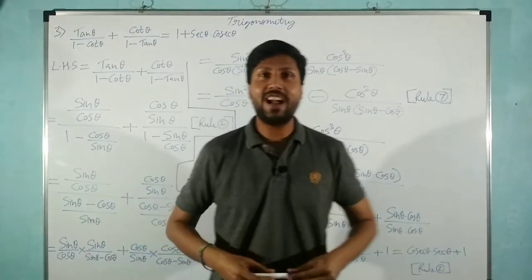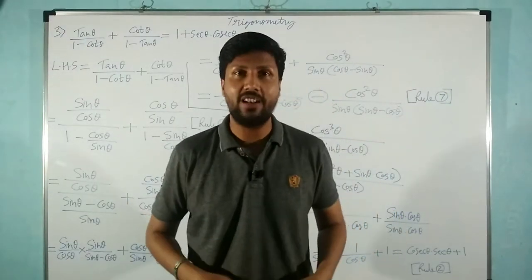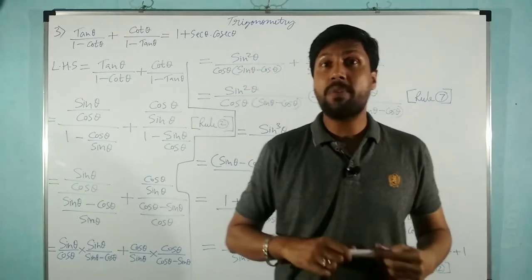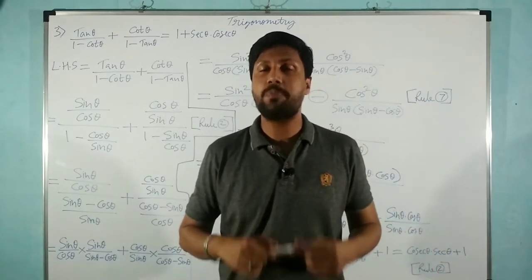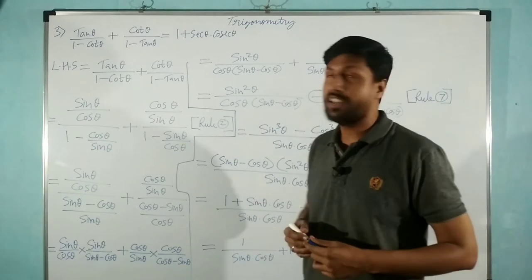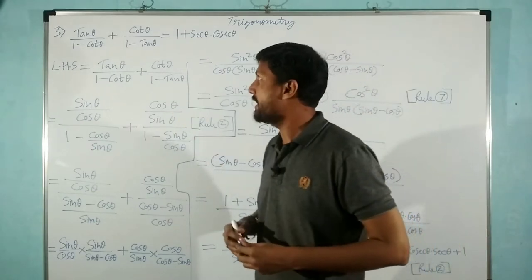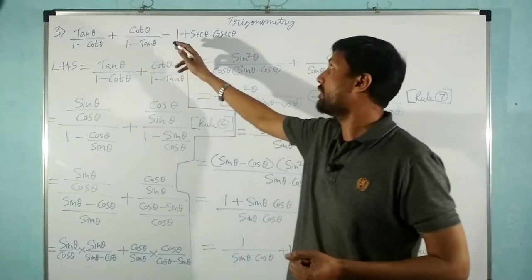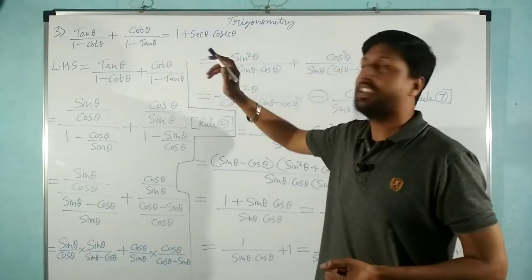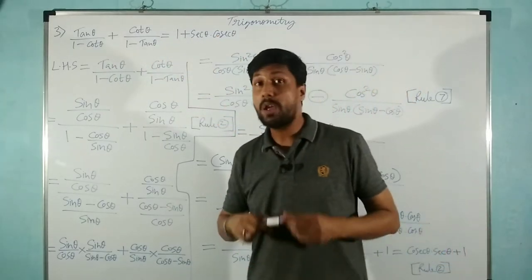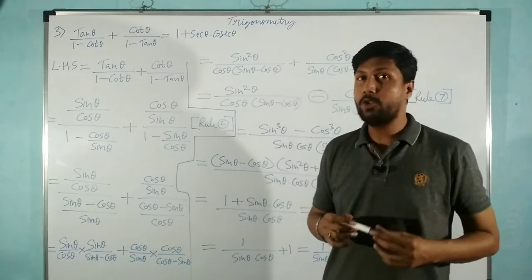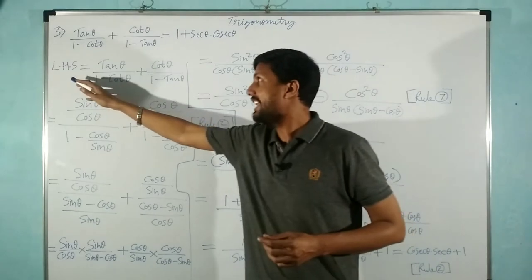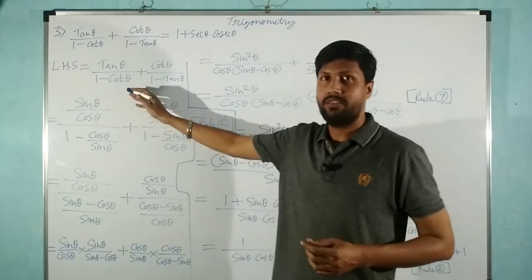Hello everybody, this is Meghraj and I welcome you to my YouTube channel. Today we are going to see part 3 of question number 5 of exercise 8.4. The question is: tan θ / (1 - cot θ) + cot θ / (1 - tan θ) = 1 + sec θ · cosec θ. We have to prove this, so first of all we will work with the LHS.